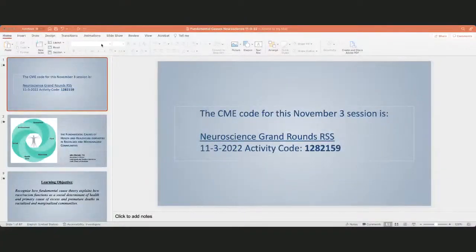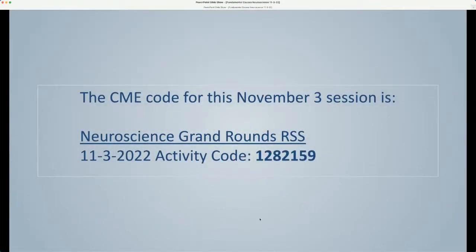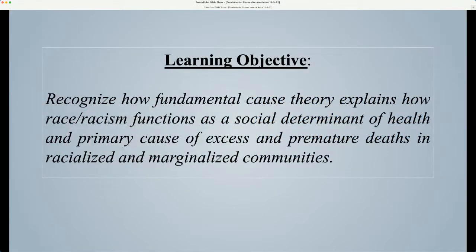This is also a scripted presentation, for my benefit and yours, so I don't get off track. We're talking about the fundamental causes of health and healthcare disparities in racialized and marginalized communities. Our primary learning objective is to recognize how fundamental cause theory explains how race and racism functions as a social determinant of health and primary cause of excess and premature deaths in racialized and marginalized communities.